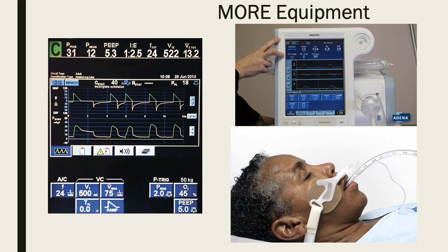The BiPAP similarly has settings at the bottom and actual patient readings at the top. For the endotracheal tube, we assess the tube markings at the teeth to ensure it stays in the same place, and we assess the holder around the tube. Patients can get really bad skin breakdown from this, so we move the tube side to side at least every two to four hours to prevent breakdown on one side of the mouth or cheek.